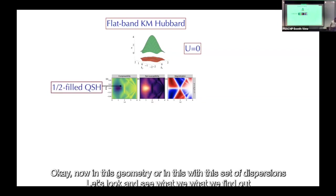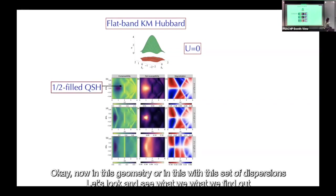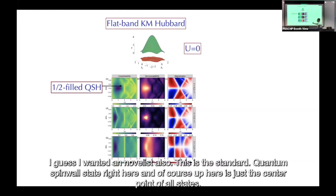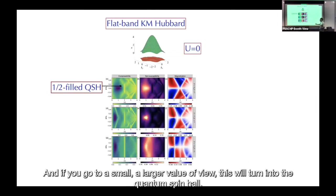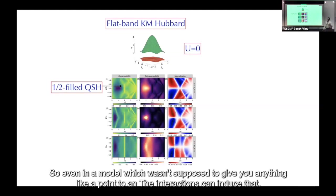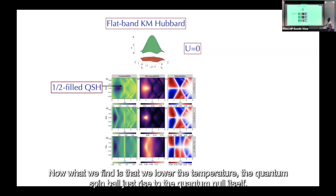In this flat-band geometry, at one-quarter filling we now see a quantum anomalous Hall state, and here's the standard quantum spin Hall state. As we increase U, the quantum anomalous Hall at one quarter evolves into quantum spin Hall. And what we find is that as we lower the temperature, the quantum spin Hall gives rise to quantum anomalous Hall.